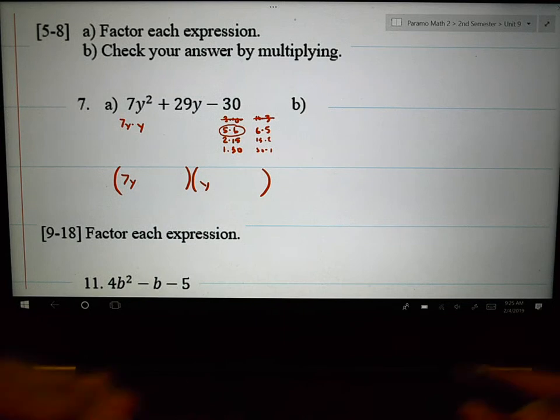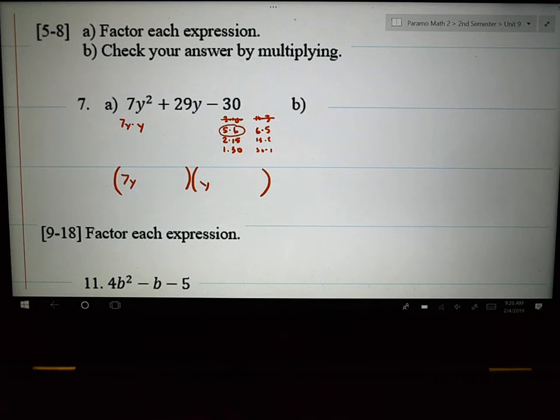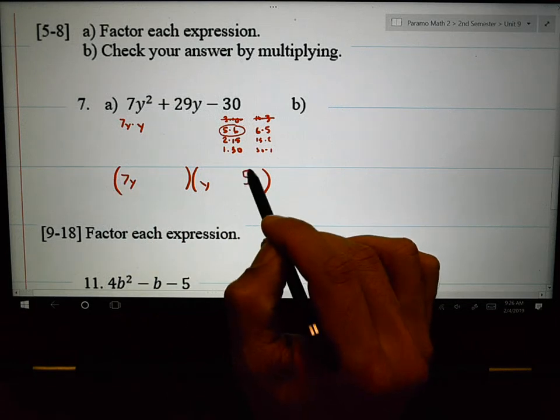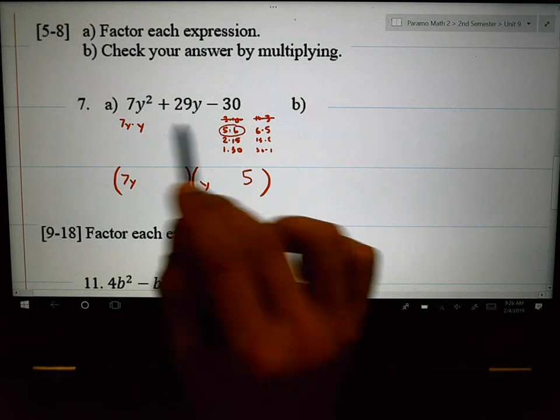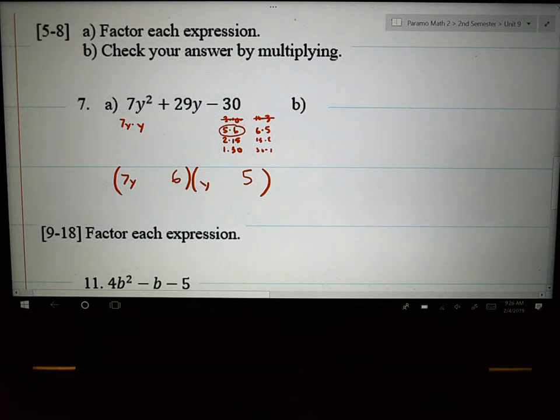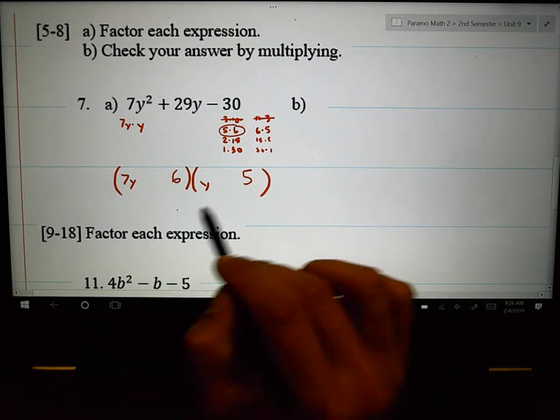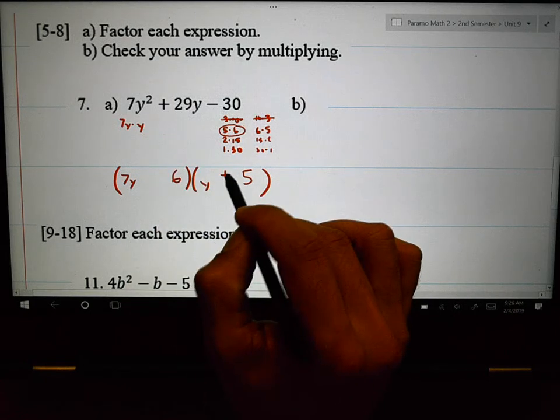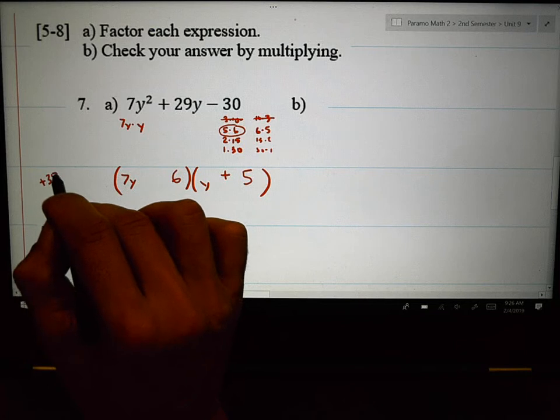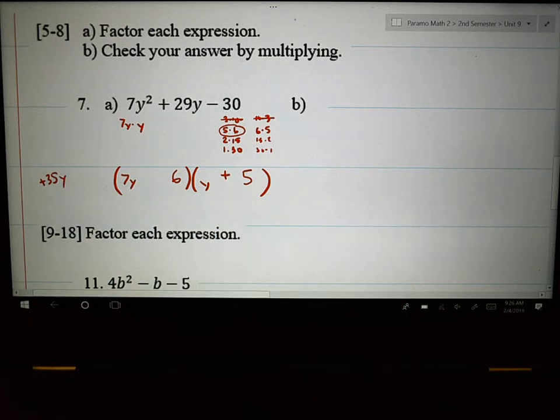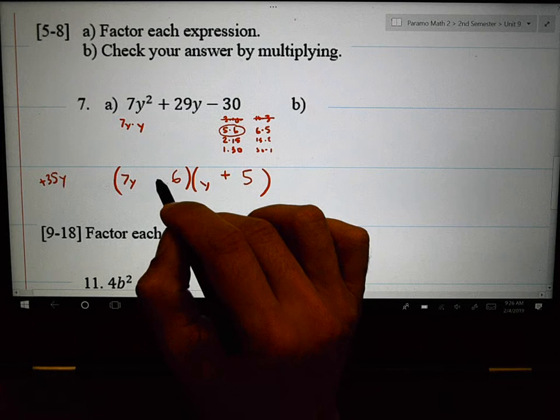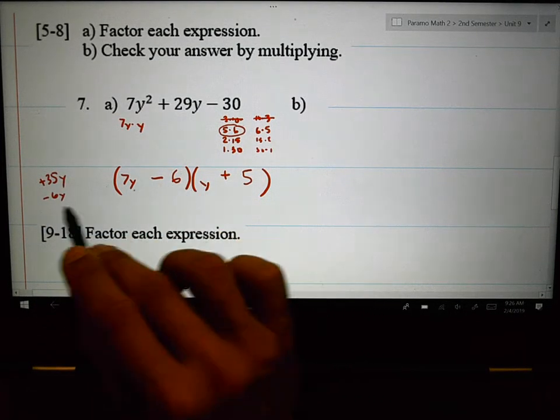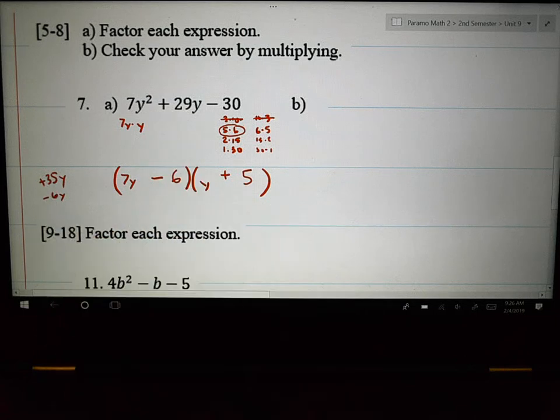That's how I figure out which combination to use is what I'm using right there. 7 times 5. I want the 7 to multiply 5. I want the 6 to multiply the Y. Put the 6 here. I want my 35, since this 29 is a positive, I want my 35Y to be positive. I'm going to put the plus sign in front of the 5. And I want my 6Y to be negative so that it will add to be the 29Y.